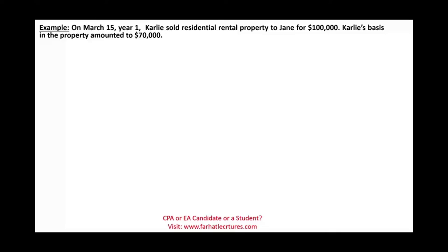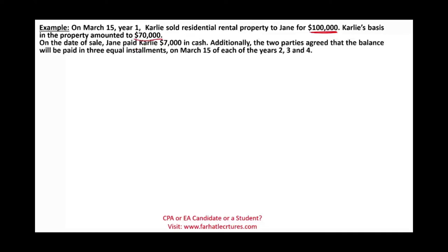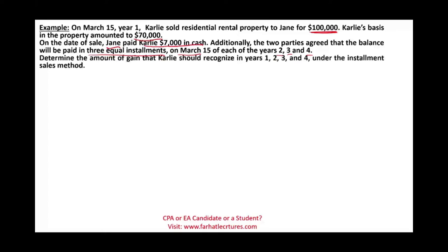On March 15, Carly sold residential property to Jane for $100,000. Carly's basis is $70,000. On the date of the sale, Jane immediately paid Carly $7,000 in cash. The two parties agreed that the balance will be paid in three equal installments on March 15 of year 2, year 3, and year 4. Determine the amount of gain that Carly should recognize in years 1, 2, 3, and 4 under the installment sales method.